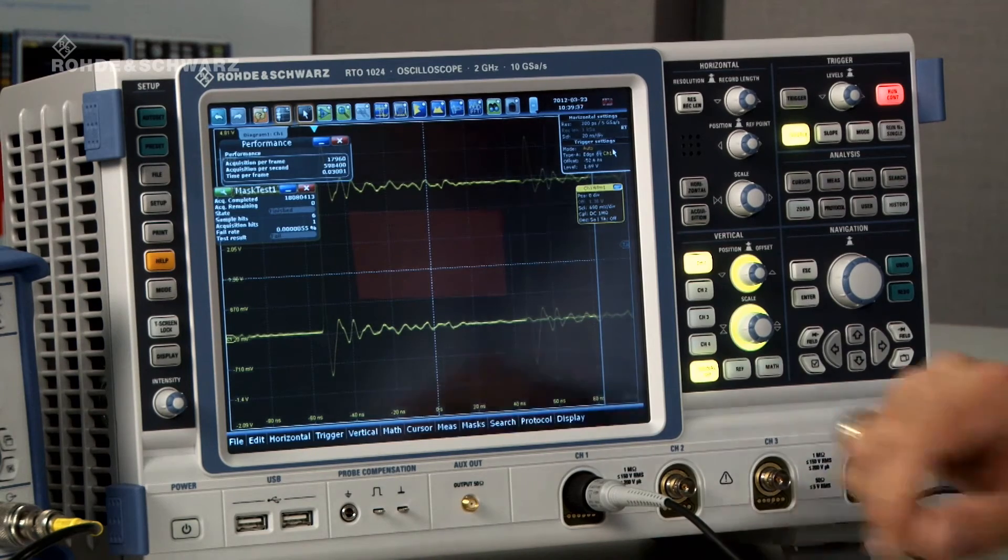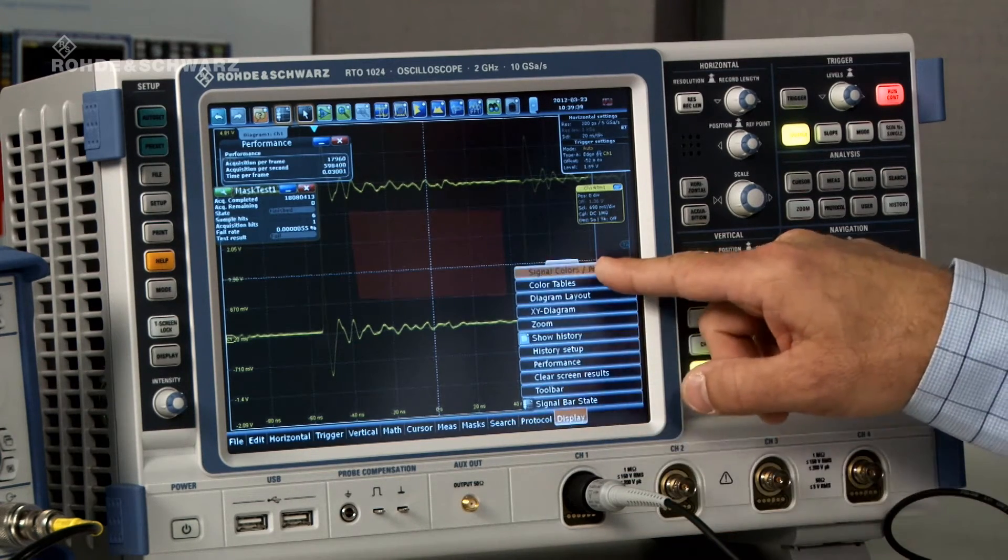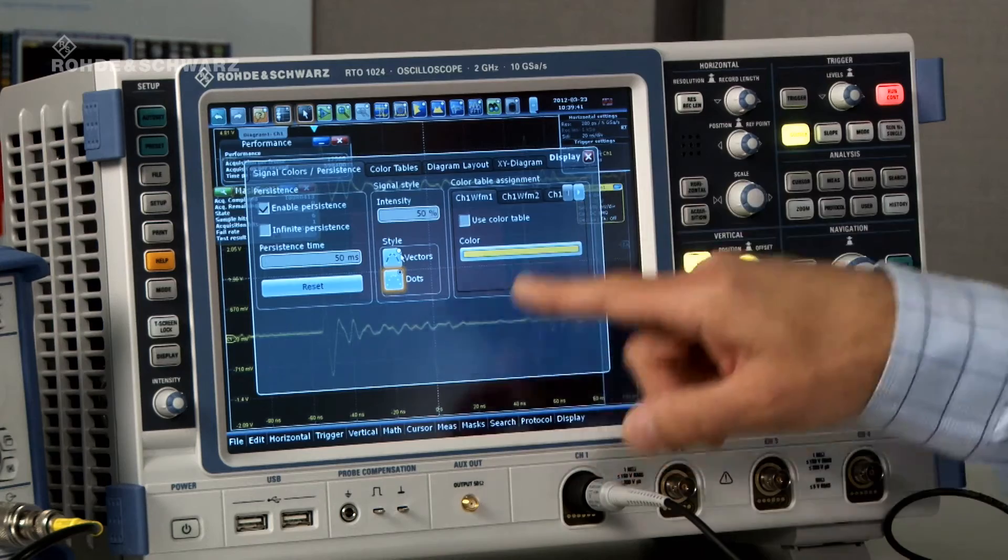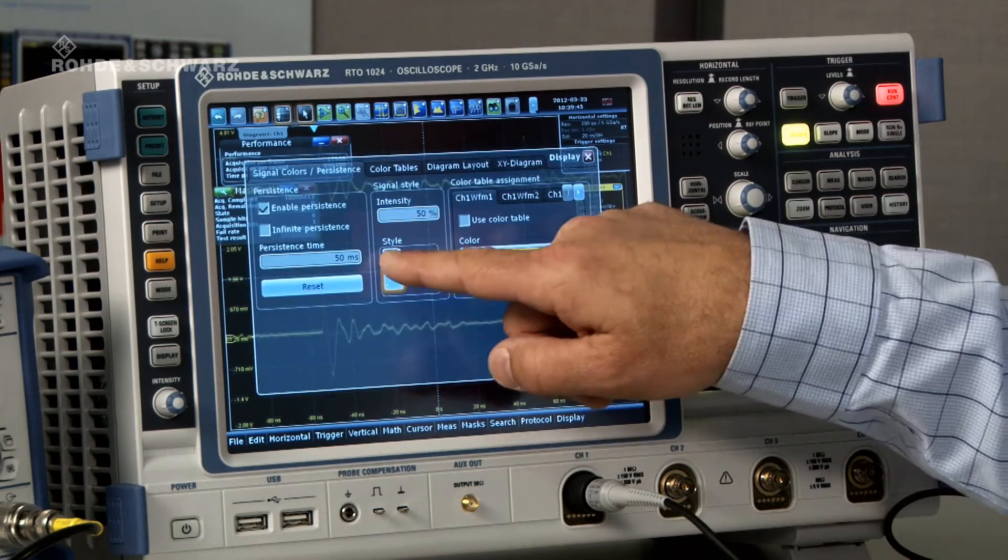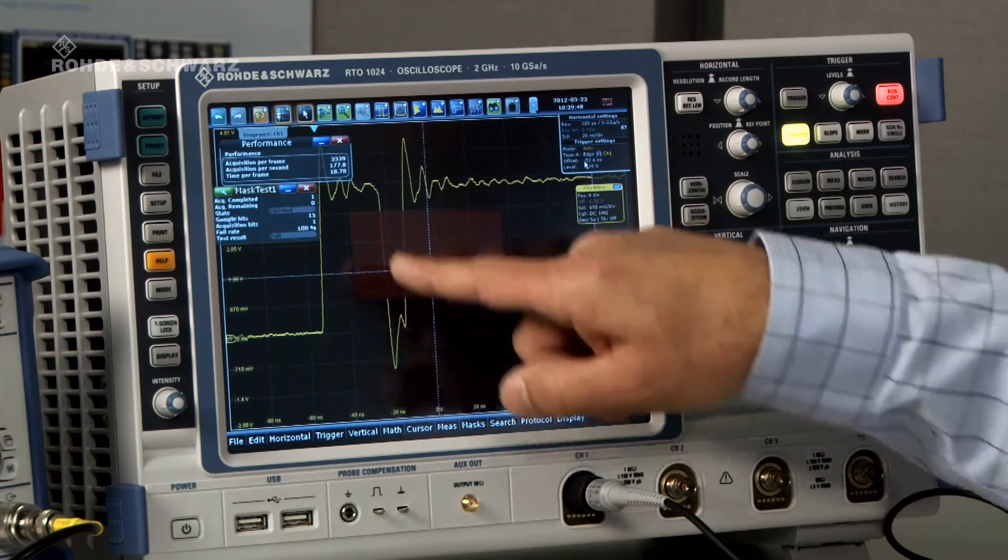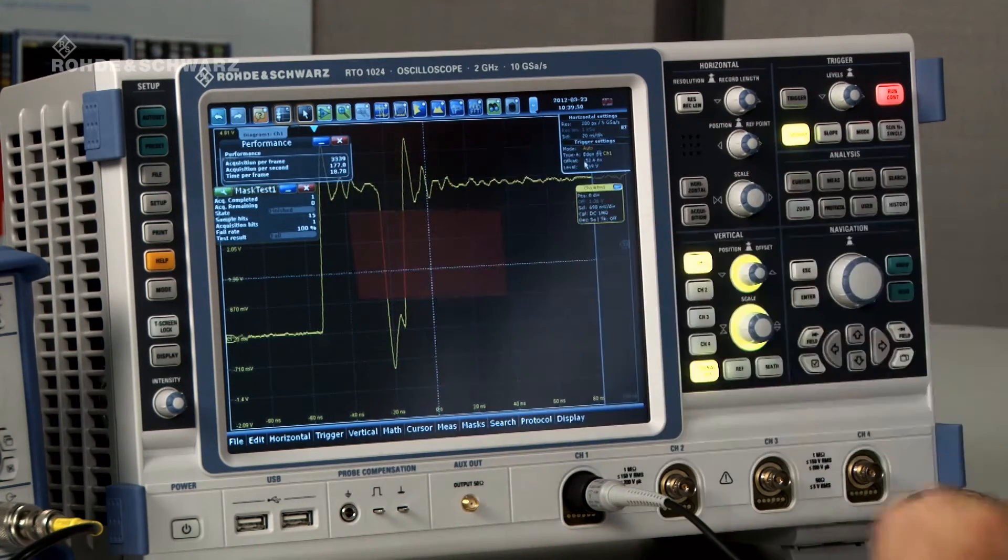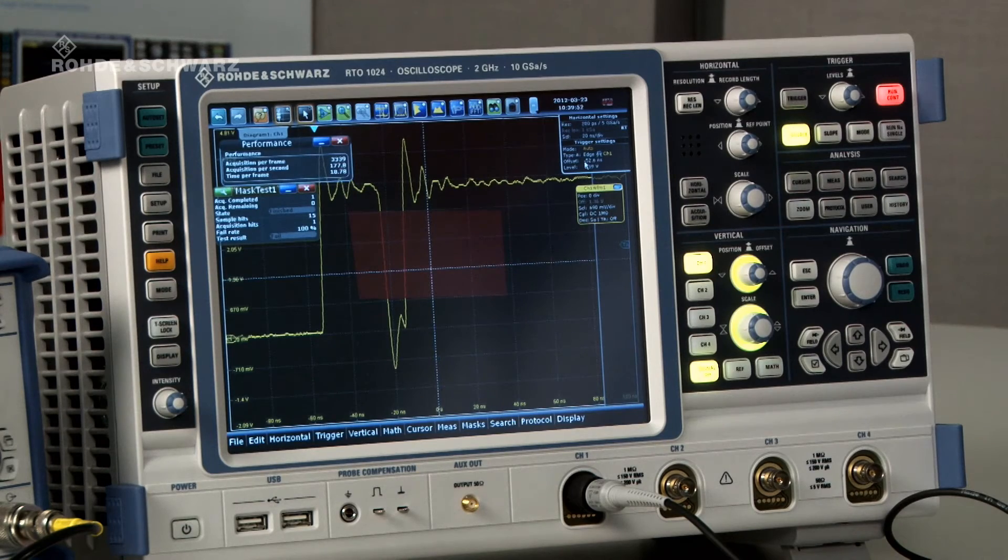But remember, I turned off the vectors. So now I can turn them back on so I can get a better view of what happened. So let's turn those vectors back on and you can see vectors. You can see the error that occurred. This is the violation in the mask that caused that error.